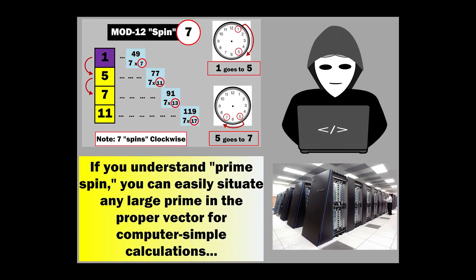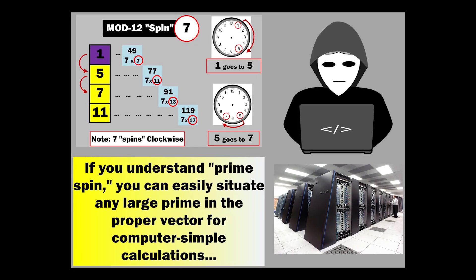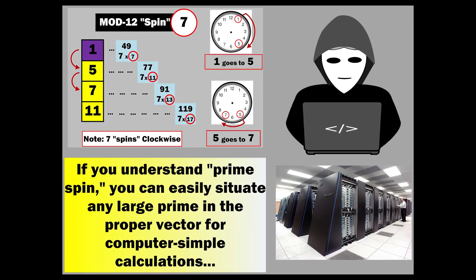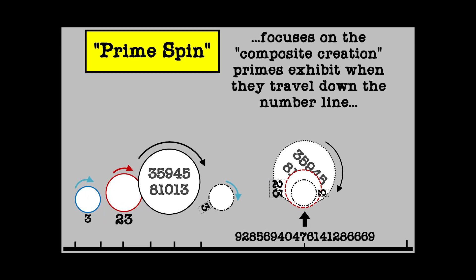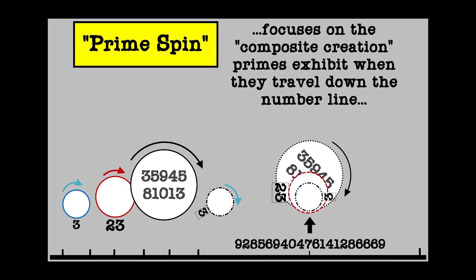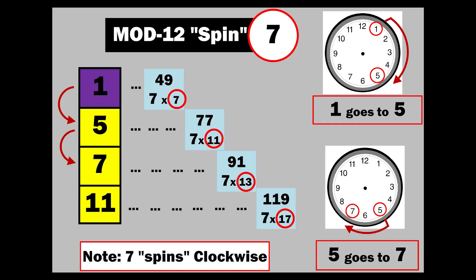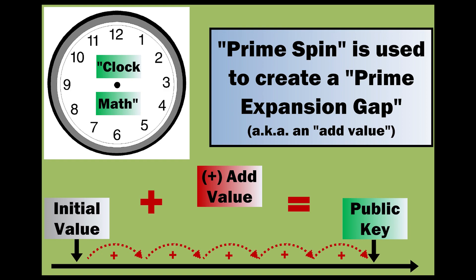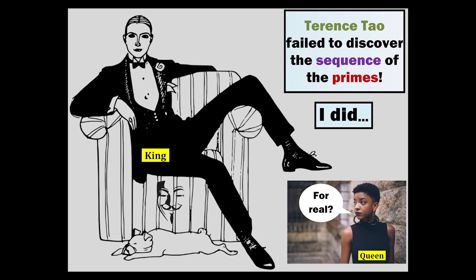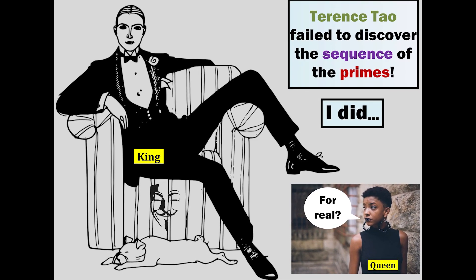If you understand prime spin, you can easily situate any large prime in the proper vector for computer's simple calculations. You see, prime spin focuses on the composite creation primes exhibit when they travel down the number line creating composites. In mod 12, 7 spins clockwise from 1 o'clock to 5 o'clock to 7 o'clock to 11 o'clock. Prime spin is used to create a prime expansion gap which will be added to an initial value, over and over, until we reach or exceed the public key. Your buddy Terrence Tao failed to discover the sequence of the primes. I did.